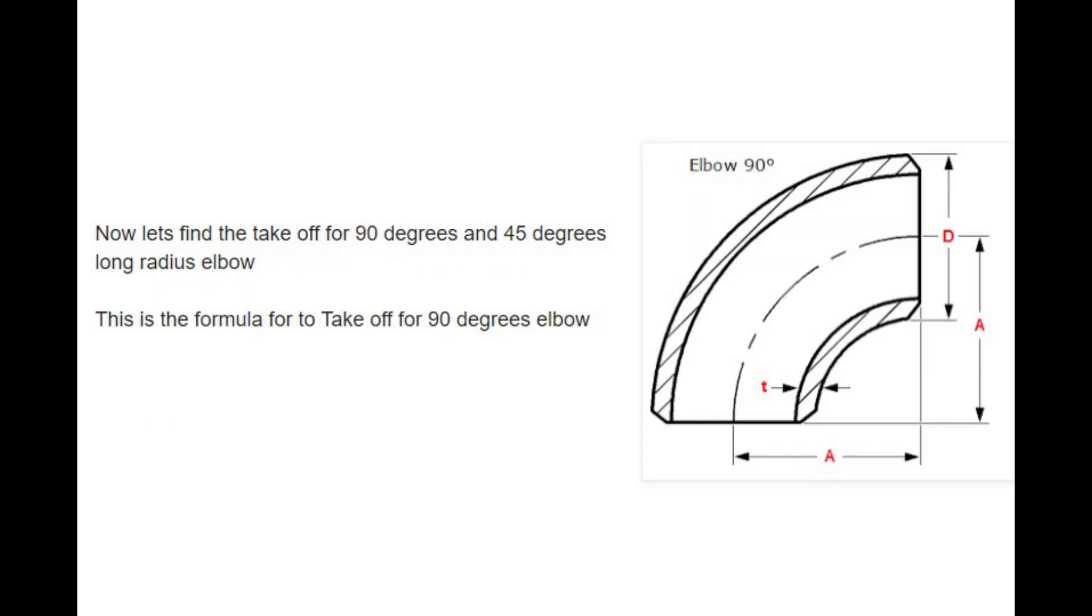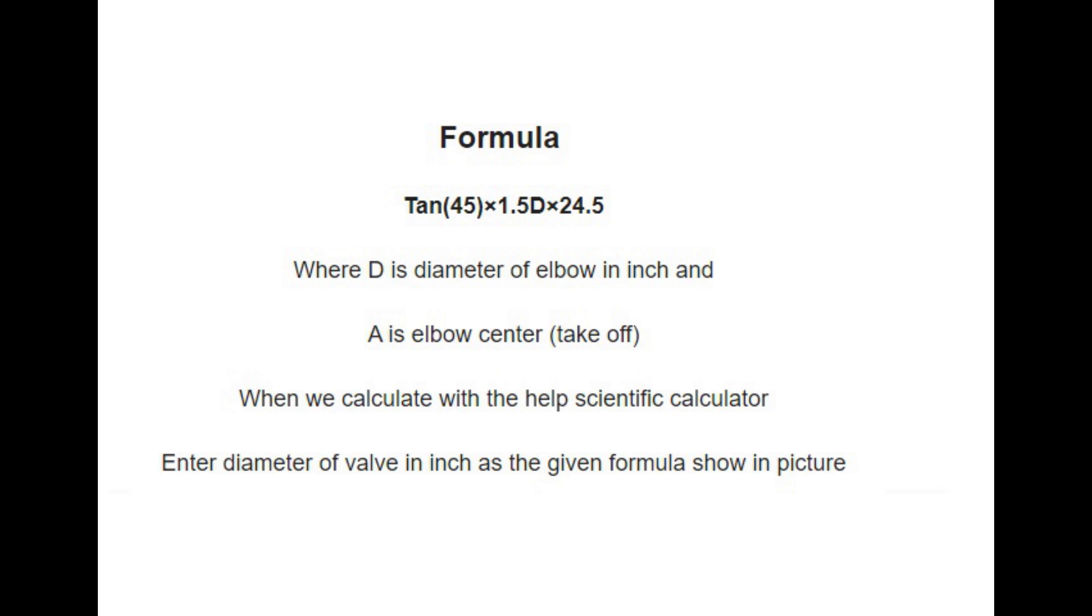Now let's find the takeoff for 90 degrees and 45 degrees long radius elbow. This is the formula for takeoff for 90 degrees elbow. Formula: tan 45 into 1.5 d into 24.5. Where d is diameter of elbow in inch and a is elbow center, takeoff.